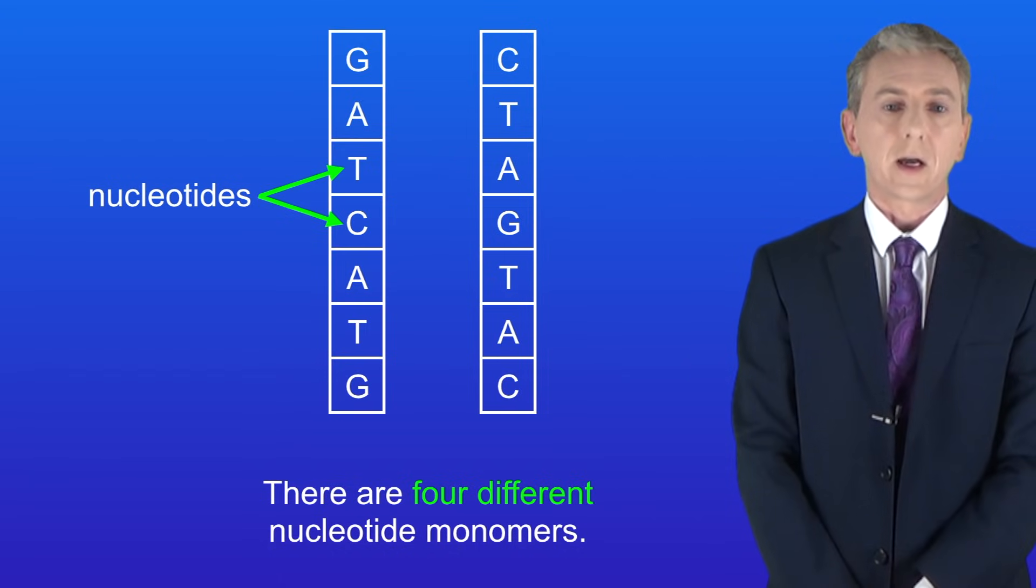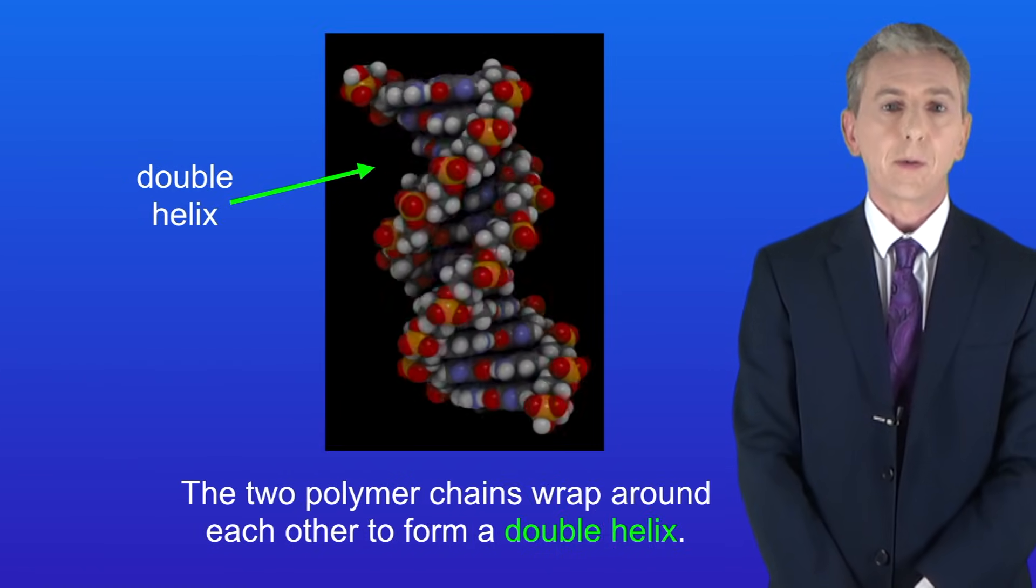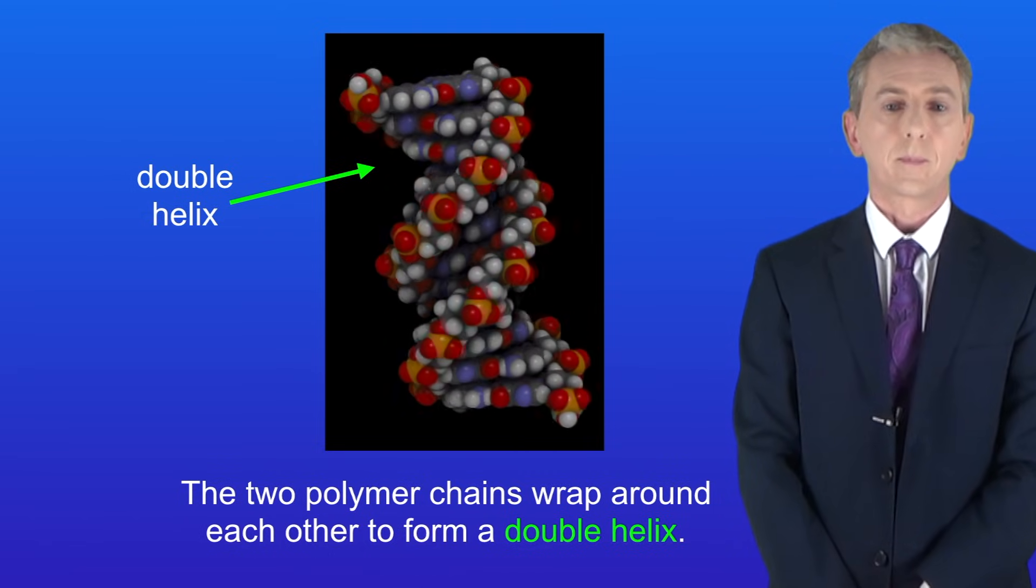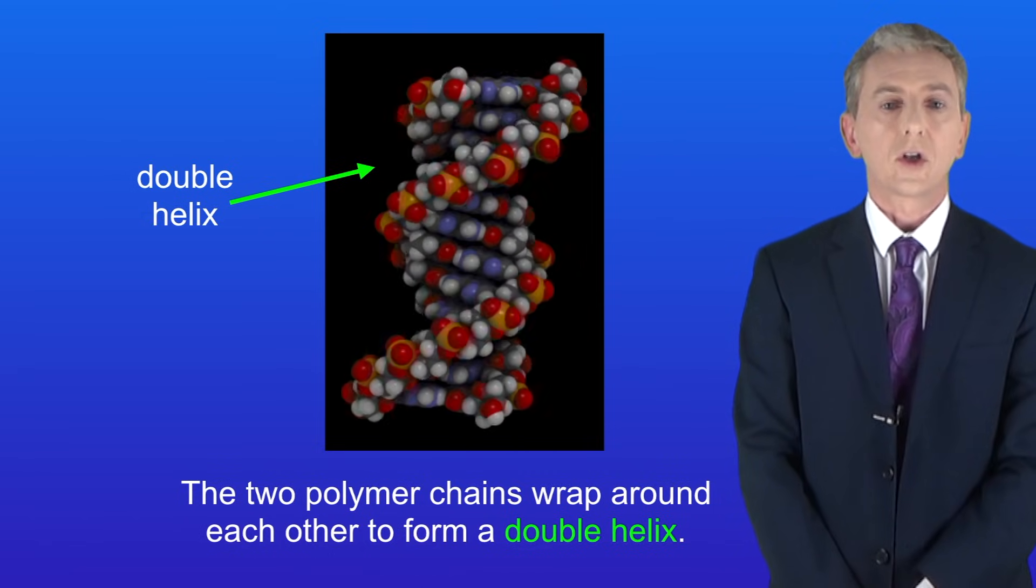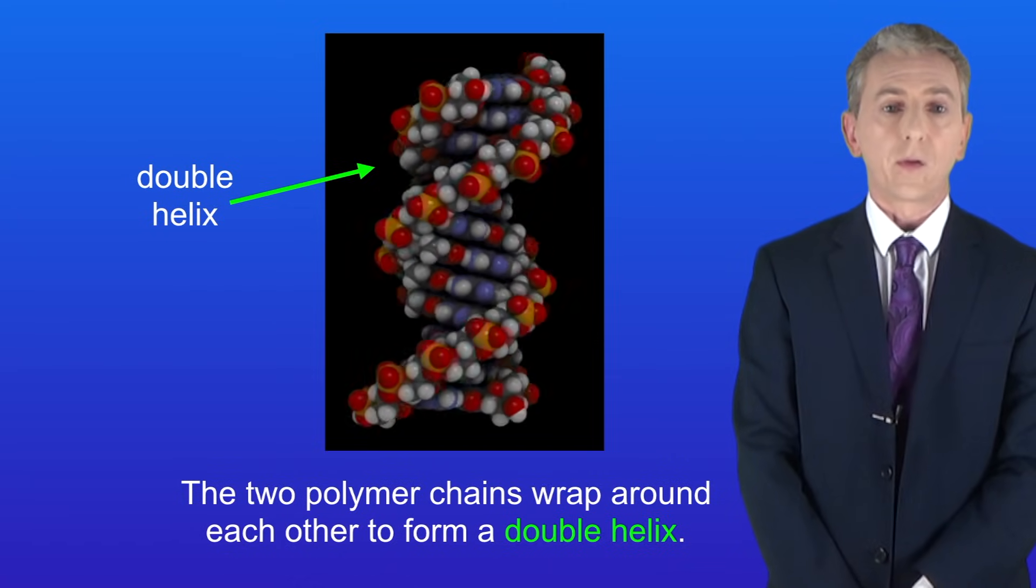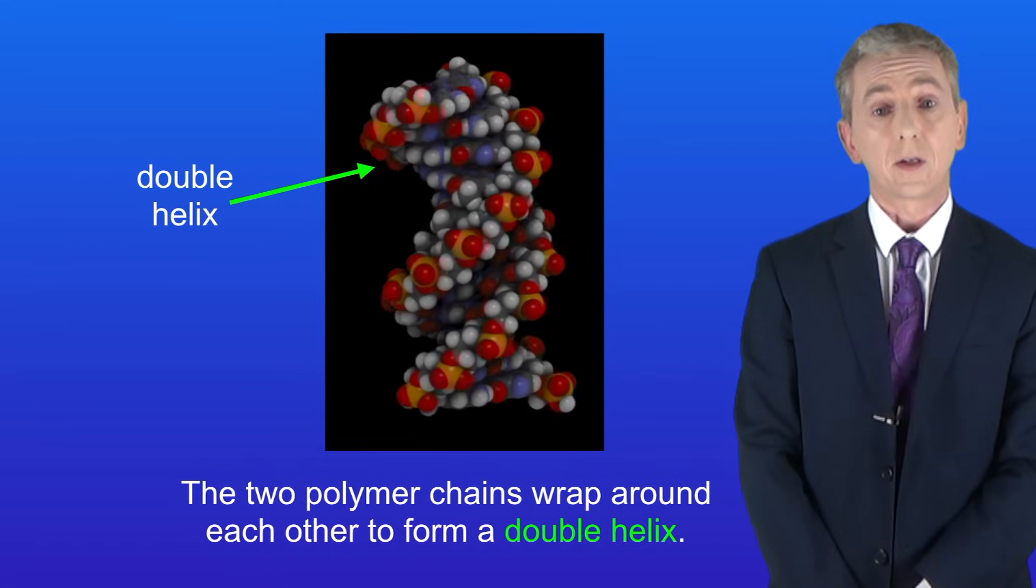Scientists call these nucleotide monomers G, A, T and C for short. Now the two polymer chains wrap around each other to form a double helix and I'm showing you that here and again you're expected to use the term double helix in your exam. You'll see a lot more about the structure of DNA in the biology videos on this topic.